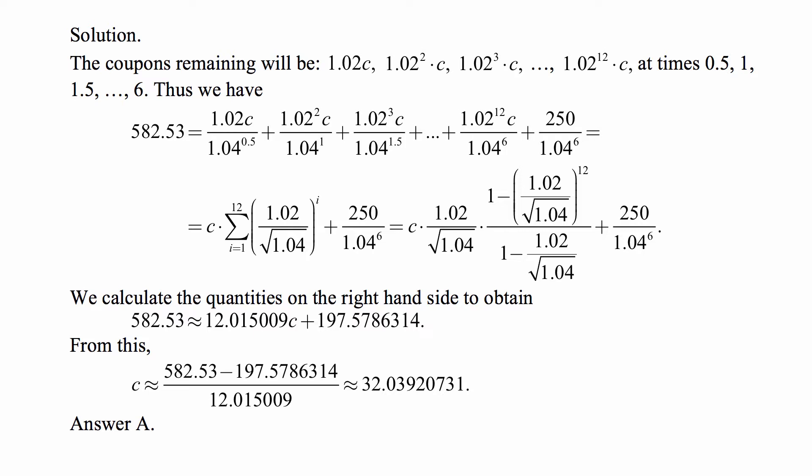Then plus the present value of the redemption value, which is 250/1.04⁶. We just calculate all these numbers on the right-hand side.